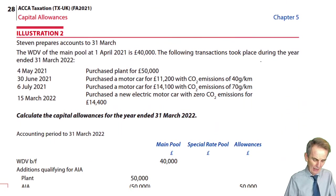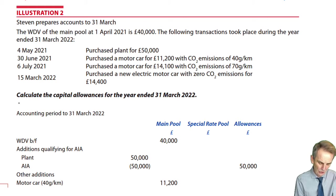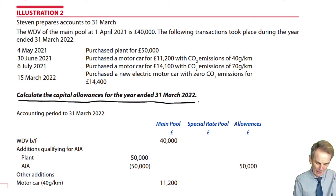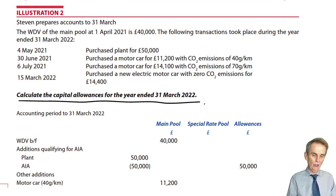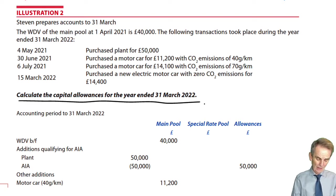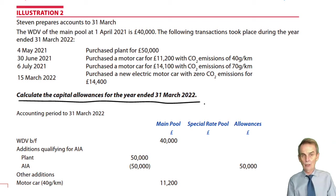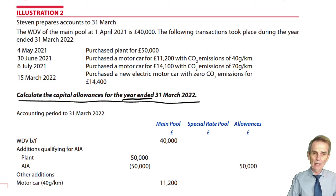Let's look at a couple of examples. Illustration two: calculate the capital allowances for the year ended March 2022. This could be a two-mark question in Section A or part of a Section C question. Within this accounting period to 31st March — it is the year end — so given our AIA and WDA, it's 12 months and therefore the full amounts will be available.